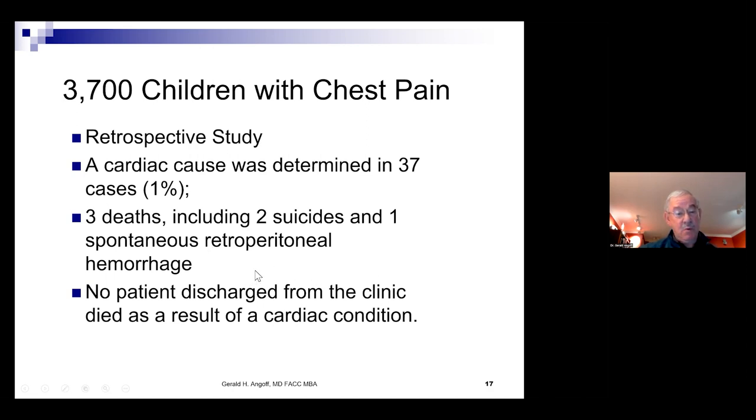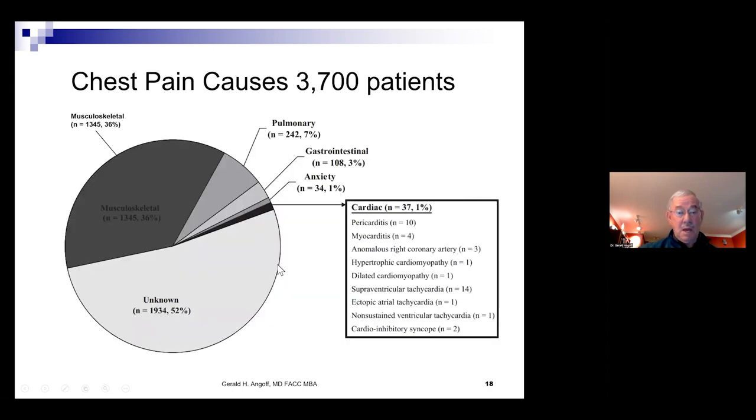Three thousand seven hundred children with chest pain. It was a retrospective study. And a cardiac cause was determined in one percent. There were three deaths, but they weren't cardiac. Two suicides and one spontaneous retroperitoneal hemorrhage. And no patient discharged from the clinic died as a result of a cardiac condition. This is not the population where there was sudden death. Causes were identified for some, but not all. The most common was musculoskeletal chest pain, sometimes called precordial catch syndrome, followed by pulmonary and GI of the causes that were identifiable.